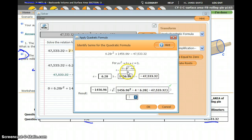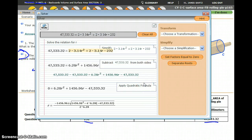And that's all over 2 times a, so 2 times, and then a again is 6.28, and I'm going to press enter.